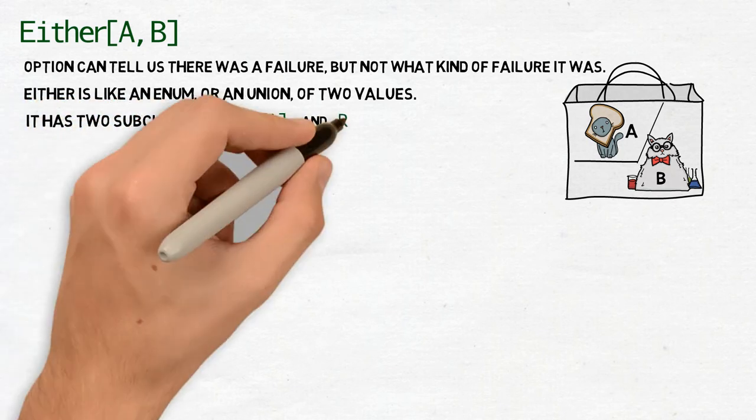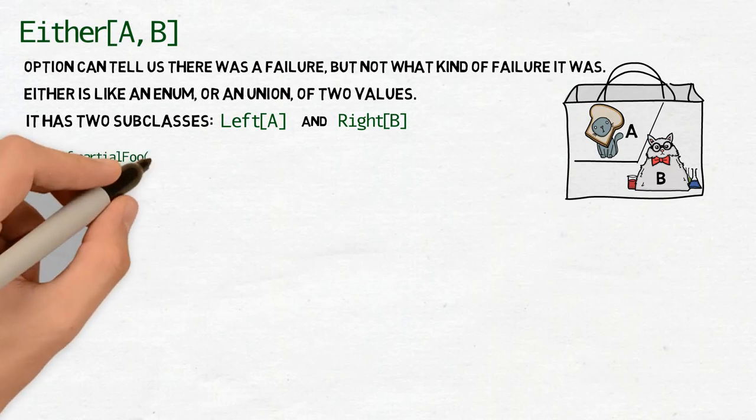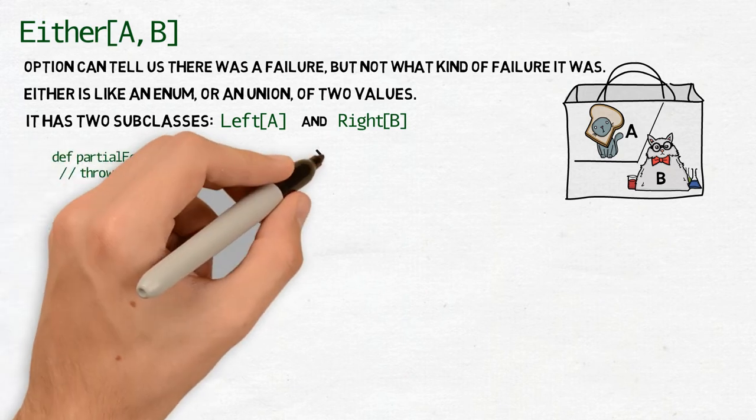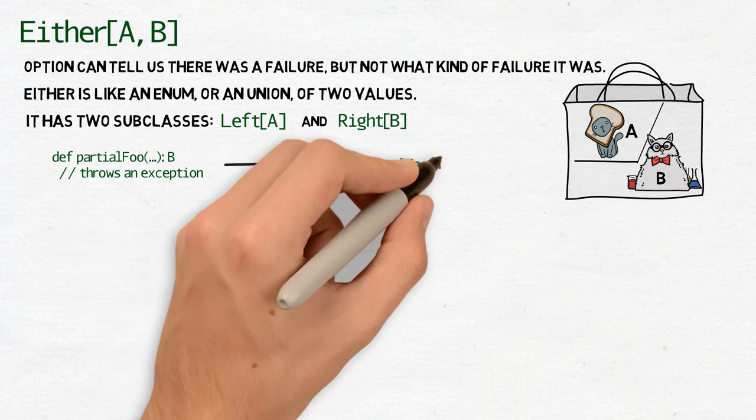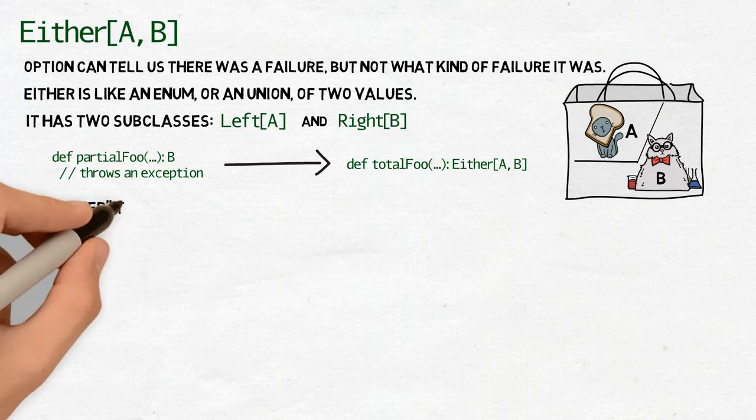So every time we have a function partialFu, for example, which can throw an exception, we can transform it into a totalFu that will return an either, when B is the type of our valid result and A is a data structure which describes the error. But wait, there is more.